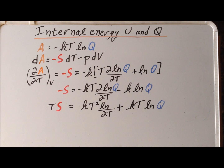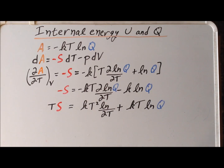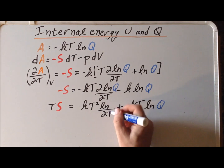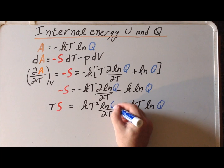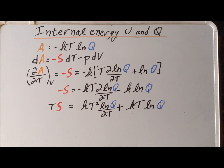Next, we multiply each side by minus T, the temperature, so that gives us all positive values. We have TS on the left-hand side is equal to kT² times the derivative of the natural log of the canonical ensemble partition function Q with respect to the temperature, plus kT times the natural log of Q.